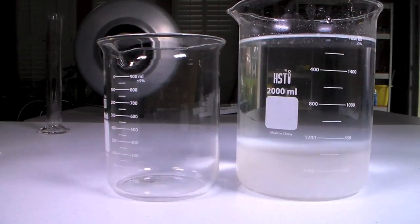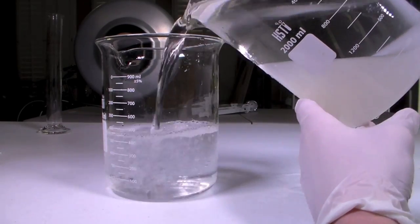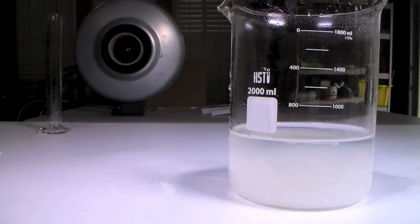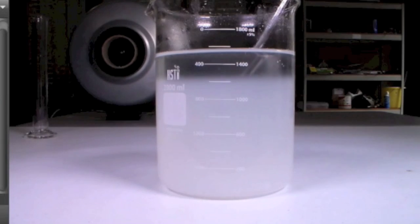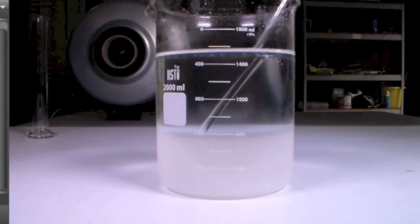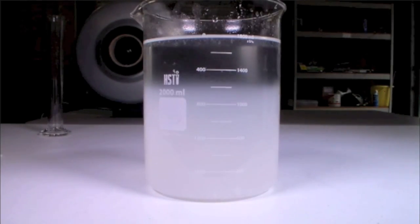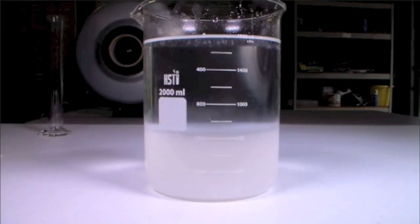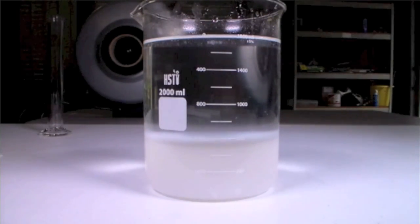After the mixture settles, decant off the water and leave the Aluminum Oxide in the beaker. Then, wash the Aluminum Oxide two more times with water, decanting the liquid after each washing. These extra washings will ensure that as much sodium chloride as possible is removed.